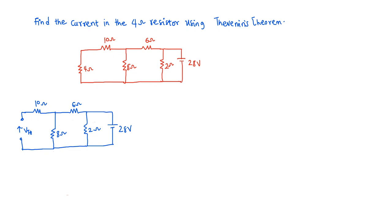To apply Thevenin's theorem, first of all, you will have to take out the 4 ohms resistor and then calculate the voltage across the terminal where the 4 ohms resistor was connected. So I have this circuit here — you don't have the 4 ohms there anymore, because you want to measure the voltage across those terminals. Now that I've taken out the 4 ohms resistor, let's look at how you are going to solve for the VTH. The main source is the 28 volt and you are going to have a current coming from the 28 volt, which we name as I.